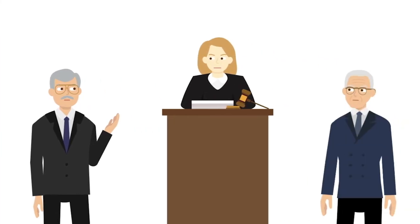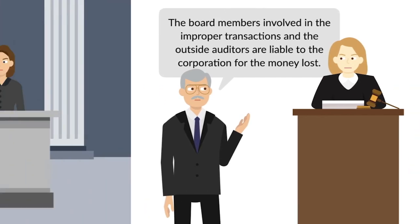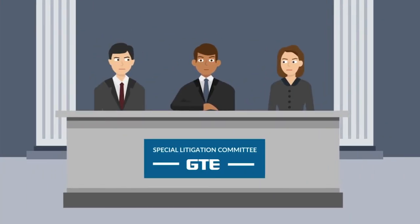Subsequently, Elias Auerbach, a shareholder in the corporation, brought a shareholder derivative action on the corporation's behalf. Auerbach alleged that the board members involved in the improper transactions and the corporation's outside auditors, Arthur Anderson and Company, were liable to the corporation for the money lost. In response, the board of directors created a special litigation committee comprised of three disinterested directors who joined the board after the questionable transactions took place.